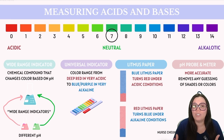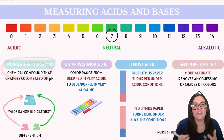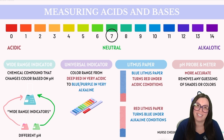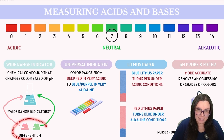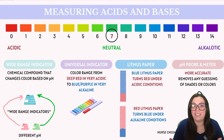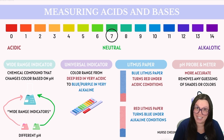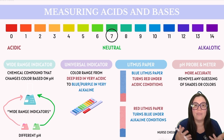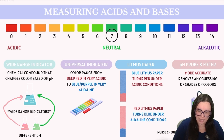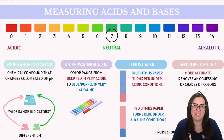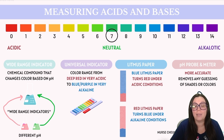pH can be measured using several methods, each with its own advantages. One common method involves the use of indicators, which are chemicals that change color based on the pH level of the solution. These indicators are typically dyes that respond to specific pH levels, making them useful for visual assessments of acidity and alkalinity. Some indicators are composed of a mixture of dyes and are known as wide range indicators because they can gradually change color across a broad spectrum of pH values.